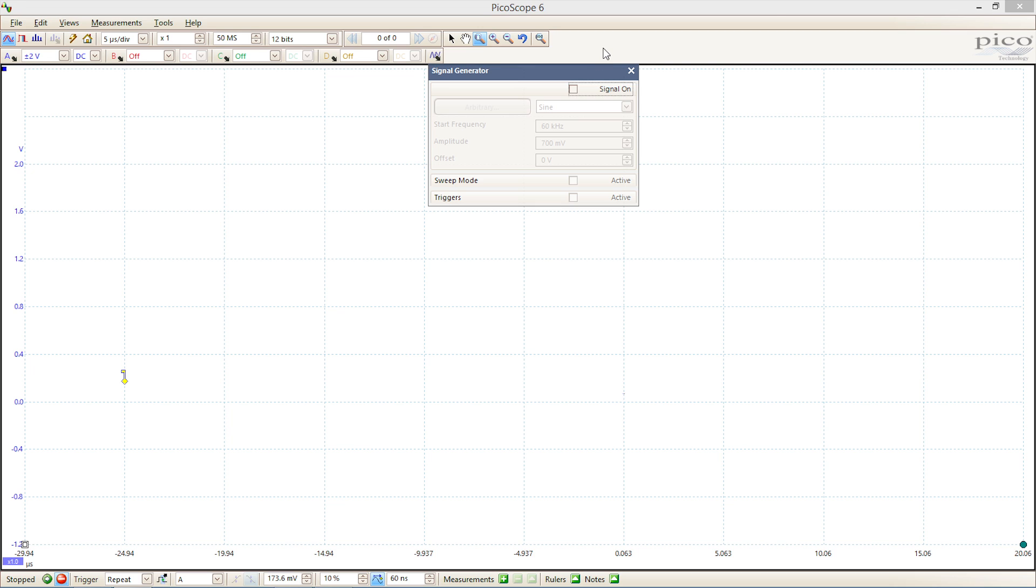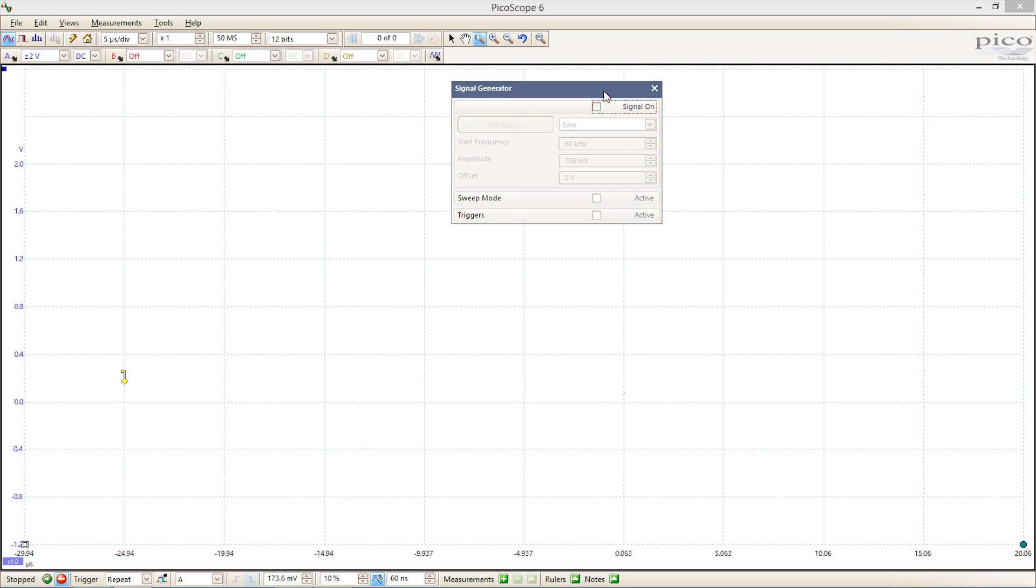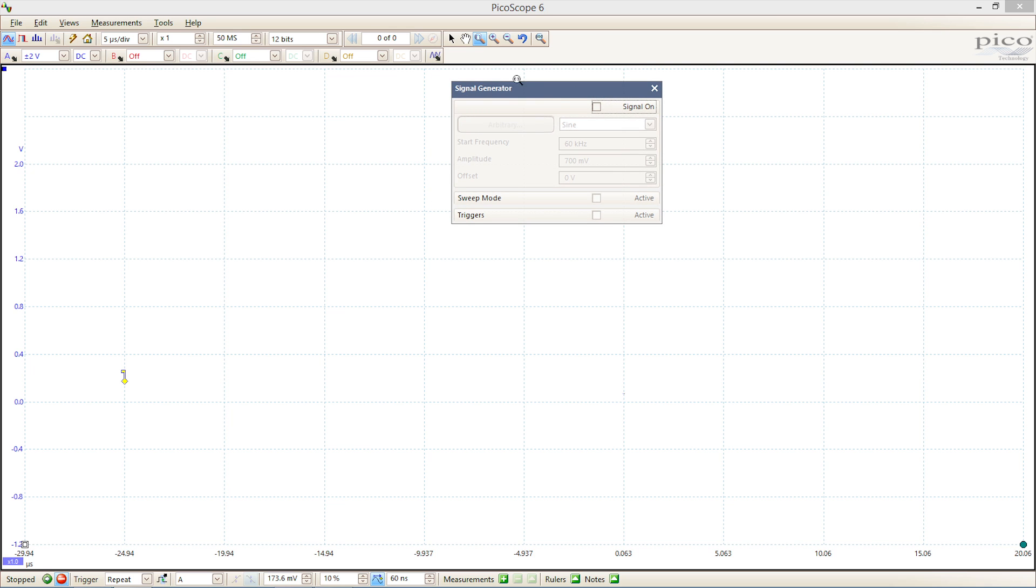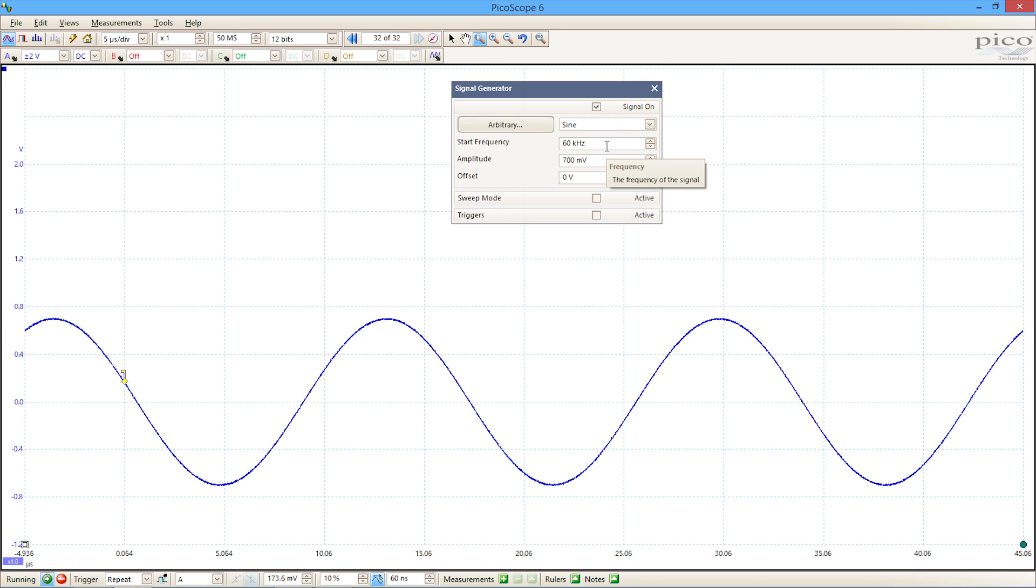It's a combination of an arbitrary waveform generator and a function generator. So the first thing we can do is to bring up the controls for the signal generator. Turn the signal on, and if we just turn the scope on, we can see that the initial signal is a simple sine wave. I've got it set to 60 kilohertz with 700 millivolts amplitude and no offset.